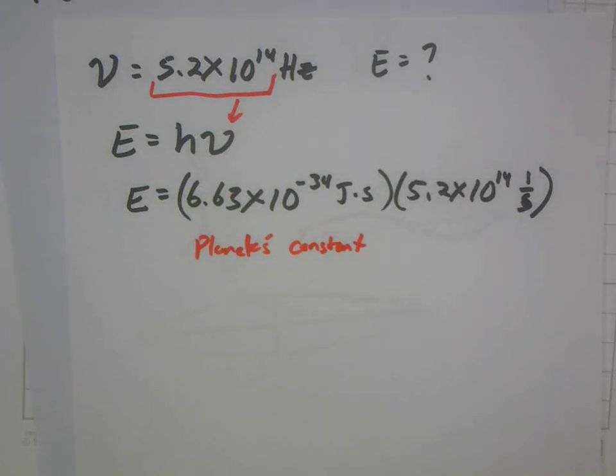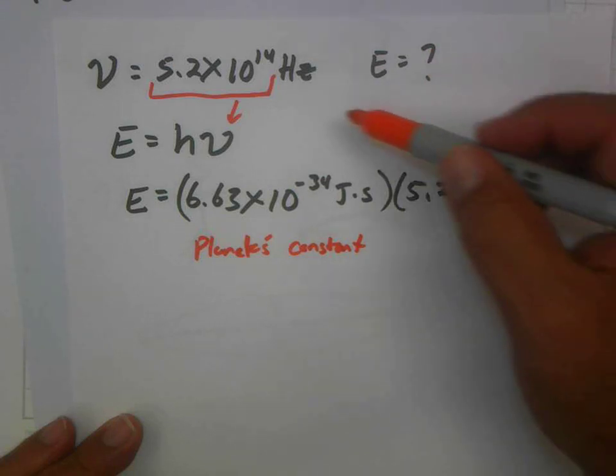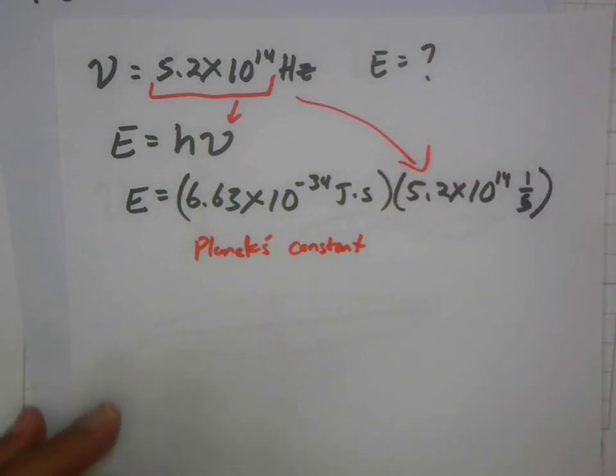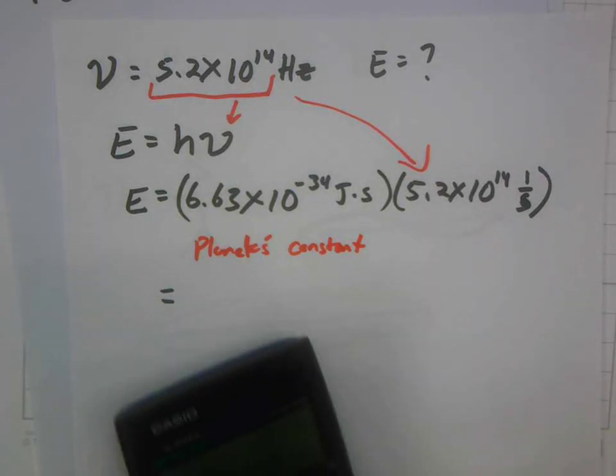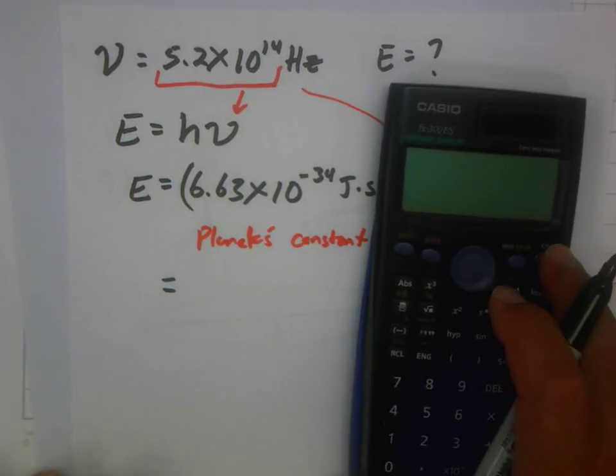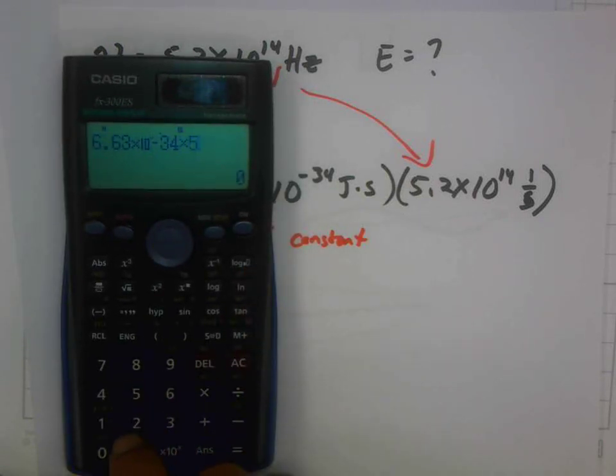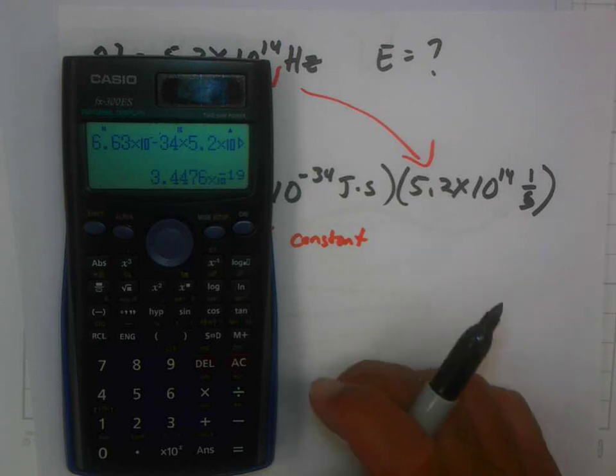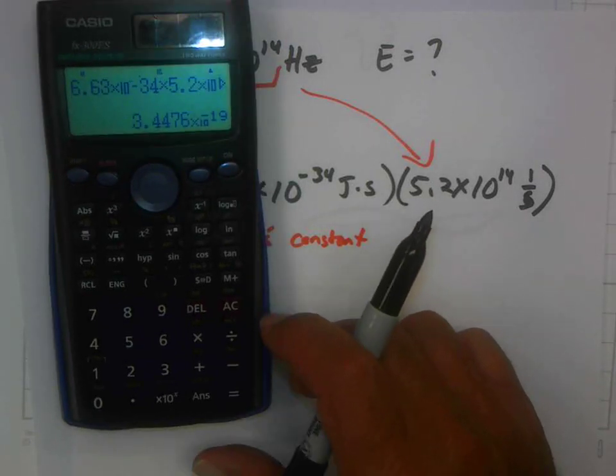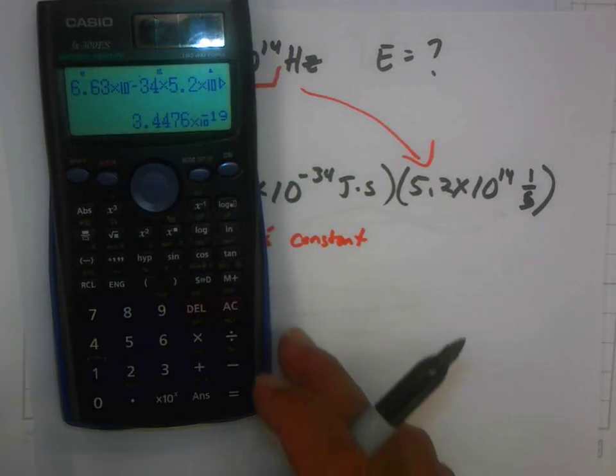All right, so that number is the one that goes in here. So all I do is multiply these two things together. Let's go ahead and do the multiplication. 6.63 times 10 to the minus 34, multiply by 5.2 times 10 to the 14th. And I get 3.45 times 10 to the minus 19th.